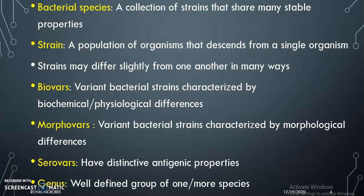Morphovars are variant bacterial strains with morphological differences. Serovars have distinctive antigenic properties. Genus is a well-defined group of one or more species.